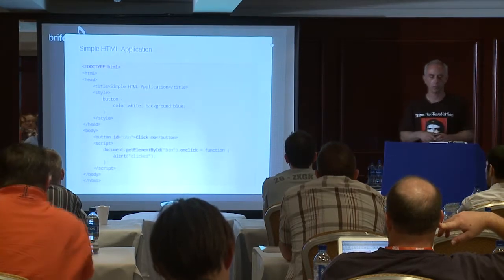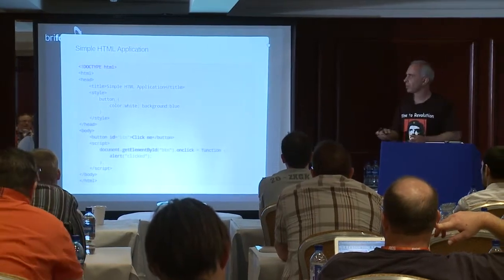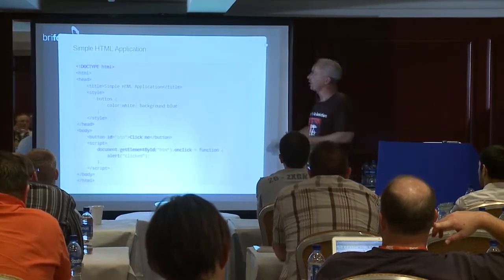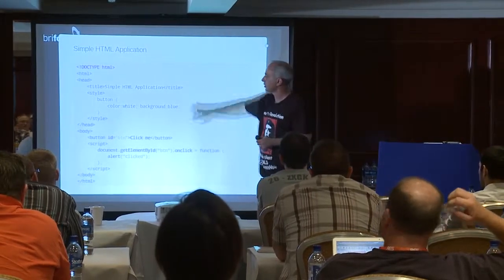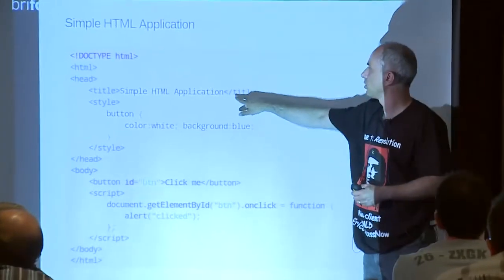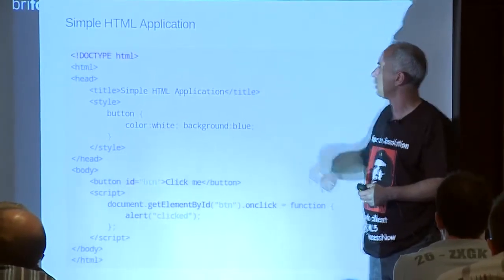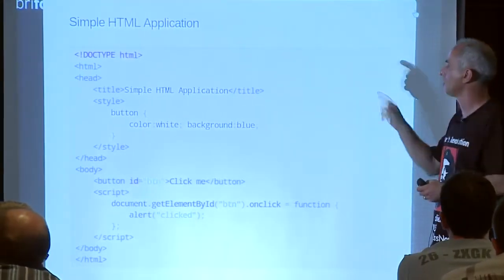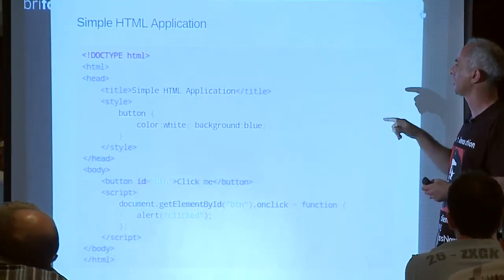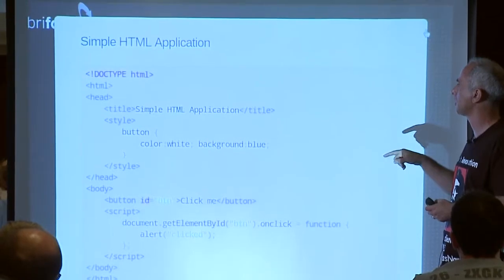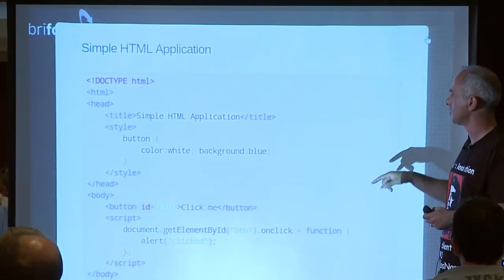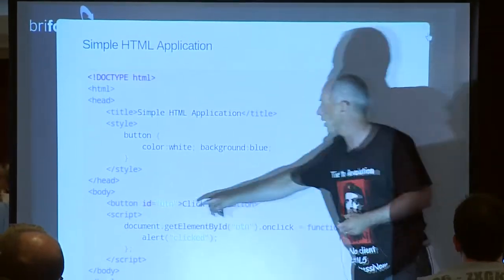Here's an example of what I mean. HTML is on the outside — all these tags with open and close brackets. In some cases you have attributes, like ID equals something. This is CSS, in this case embedded directly inside the file — though it's usually recommended to have it in separate files referenced via URLs. Basically, what this says is that buttons in this page should have a text color that's white and a background color that's blue.